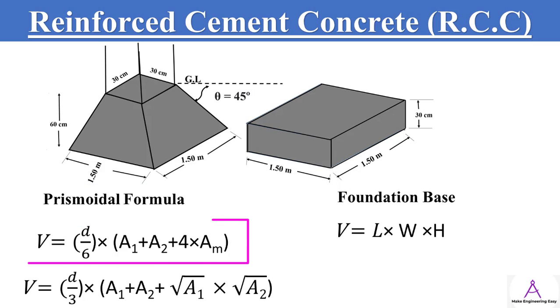According to the prismoidal formula, volume equals d divided by 6 multiplied by A1 plus A2 plus 4 times the mean area, where d is the depth of the footing, A1 is the top area, A2 is the bottom area. For the foundation base, volume equals length multiplied by width multiplied by height or thickness.